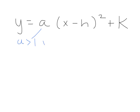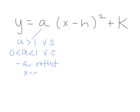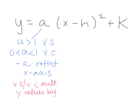If a is greater than 1, it's going to be a vertical stretch. If a is greater than 0 but less than 1 — remember, that's a fraction — it's going to be a vertical compression. If there's a negative sign in front of a, it's going to reflect it over the x-axis. When you do a vertical stretch or compression, you multiply the y values of your points by whatever a is.